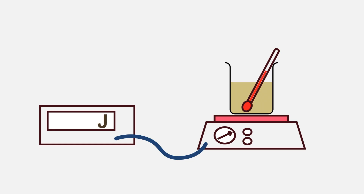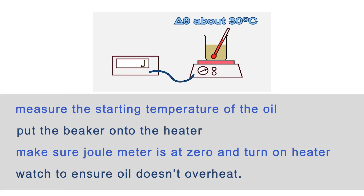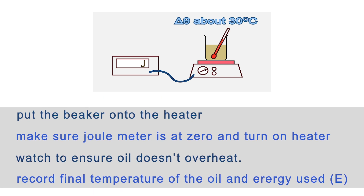Now wait until you have recorded a decent size temperature change, say 30 or 40 degrees. Turn off the heater and quickly write down the final temperature of the oil and the energy used from the joule meter.